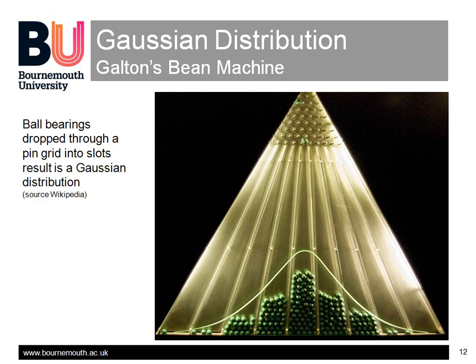This example from Wikipedia is a fairground machine in which ball bearings drop into slots after many random collisions with the pins. The function isn't an evenly spread uniform type of distribution, but one in which the middle values get a bigger count than the outer ones. Many natural processes work like this.